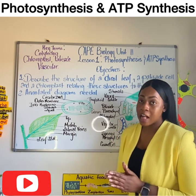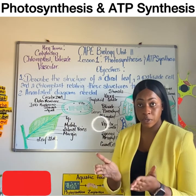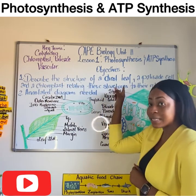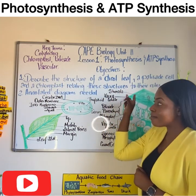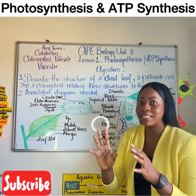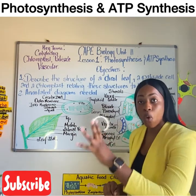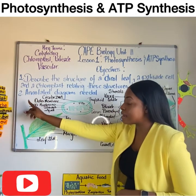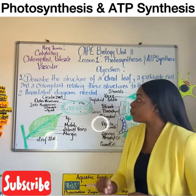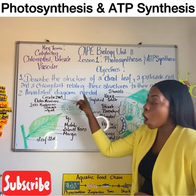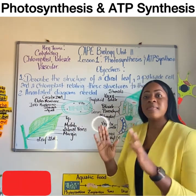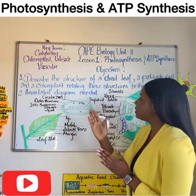Today I'll be looking at the first objective of your syllabus. You should know how to describe the structure of a dicot leaf, a palisade cell, and a chloroplast. And when you do, you should be able to relate these structures to the roles that they play. As successful CAPE Biology students, you should also be able to produce annotated diagrams of these three structures. Let's start with Objective 1: the external structure of a dicot leaf.